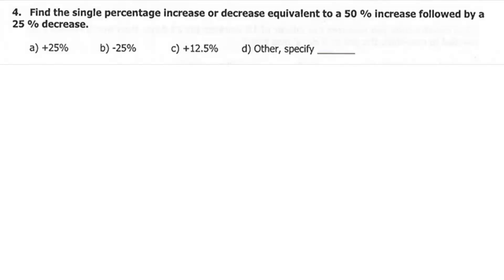This problem is not hard to solve, but you need to know what to take into account. First, write down what is given: product A, its price is increased by 50% to get price A1, then A1 is decreased by 25% to get final price A2. Numbers and percentages cannot be added together directly — you must convert percentages to decimal numbers by dividing by 100.